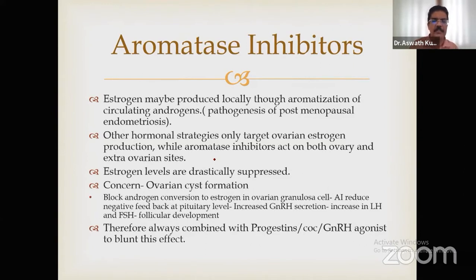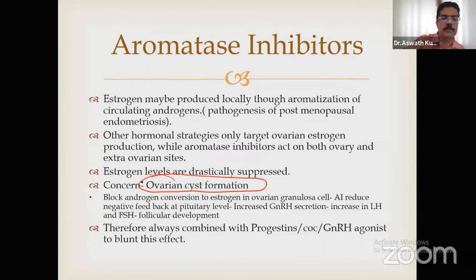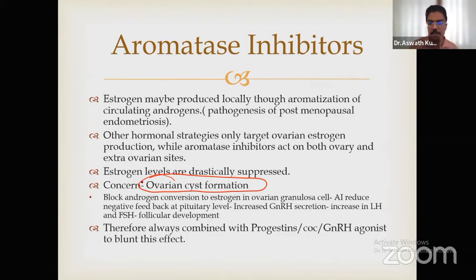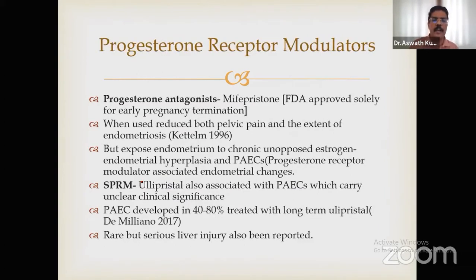Aromatase inhibitors: estrogen may be produced locally through aromatization of circulating androgens. They are considered the best drug when there is an implant outside the pelvis. For long-term use, remember that ovarian cyst formation — including large cysts — may occur on the other side and may be mistaken for a growing endometrioma. Therefore, aromatase inhibitors must be combined with progesterone, COC, or GnRH agonist to blunt this effect.